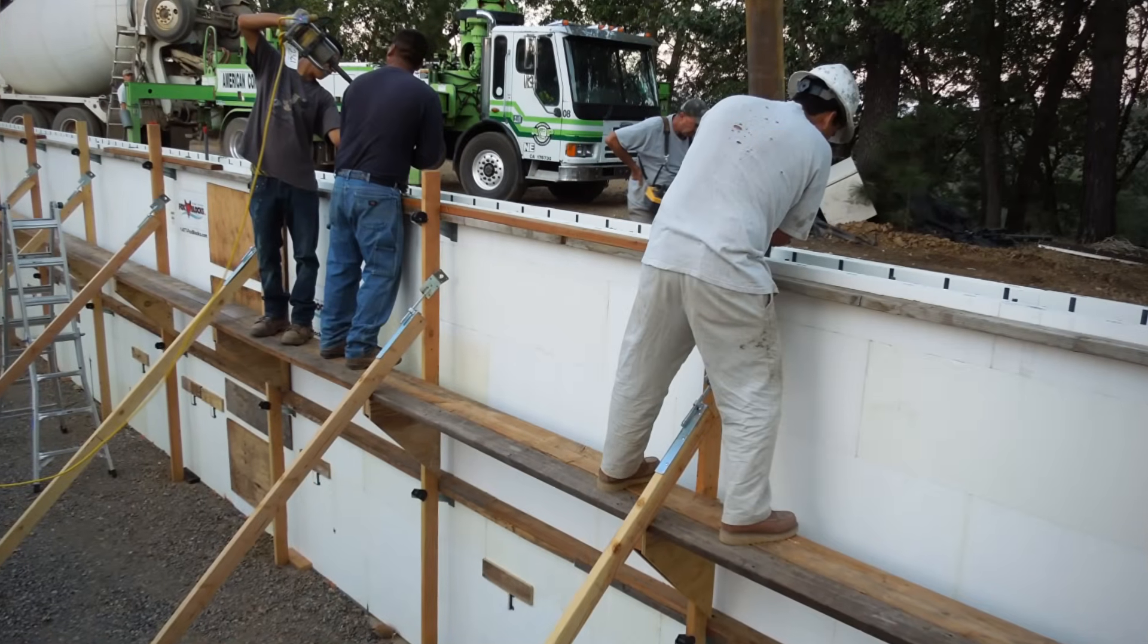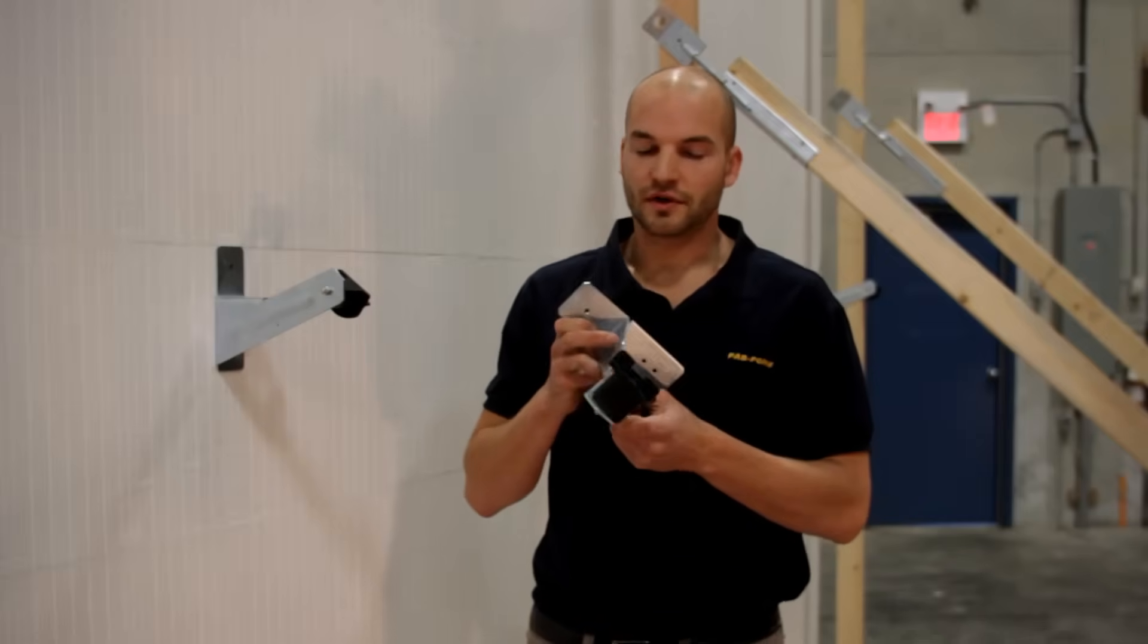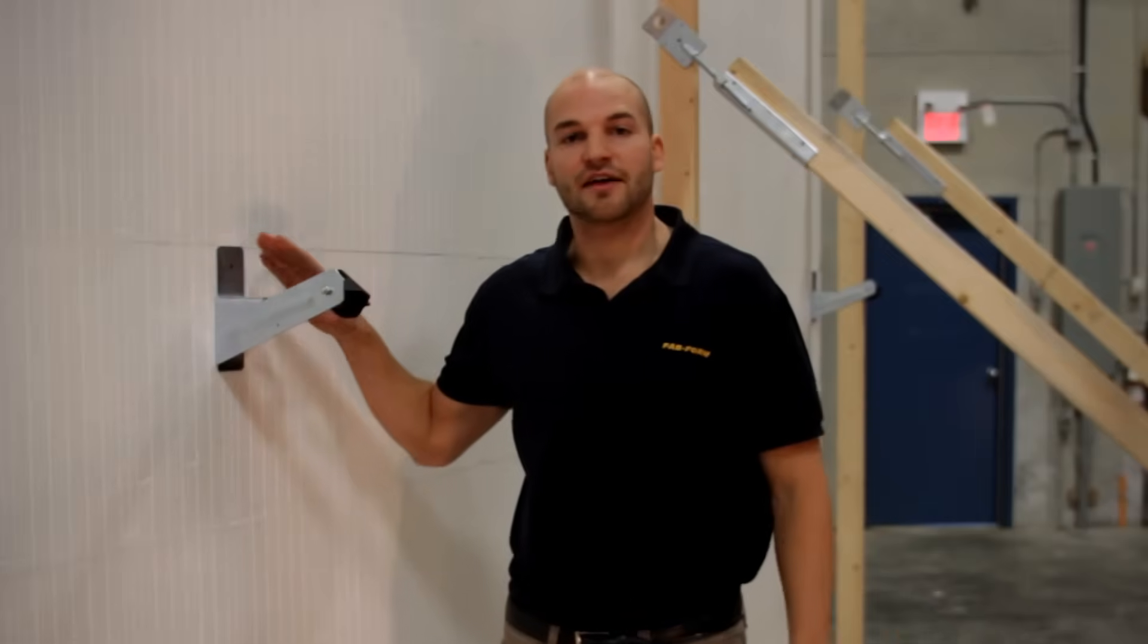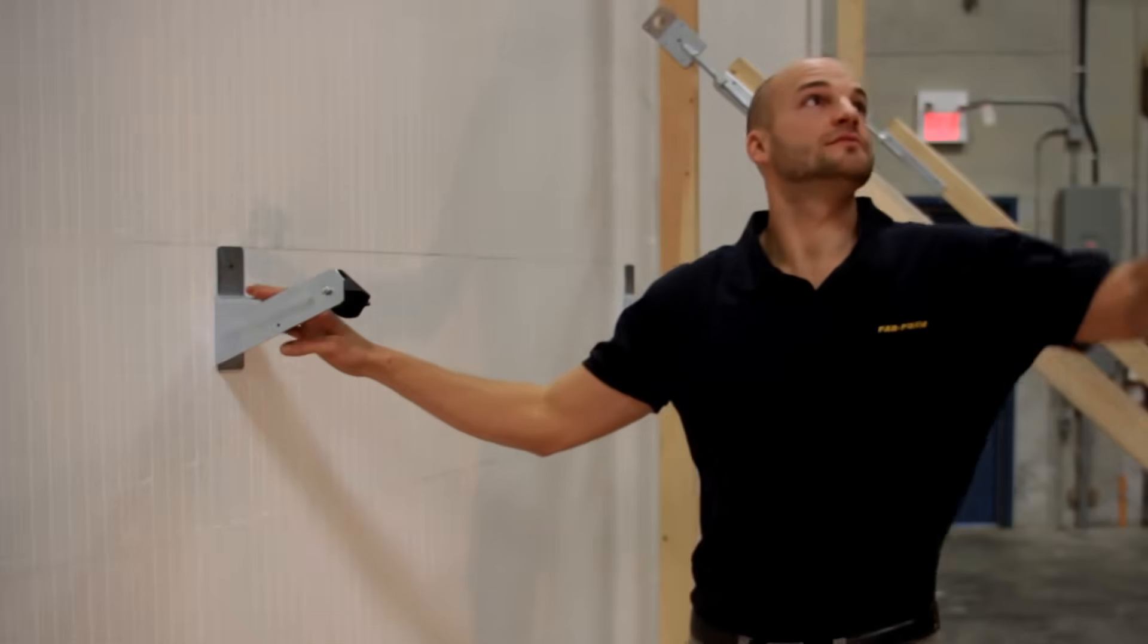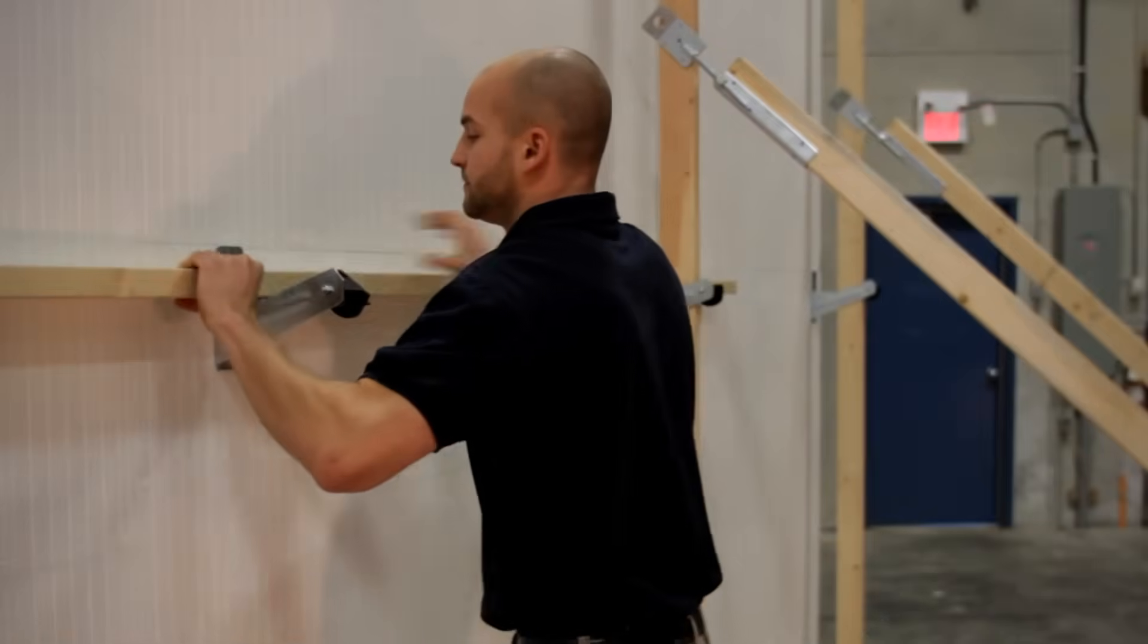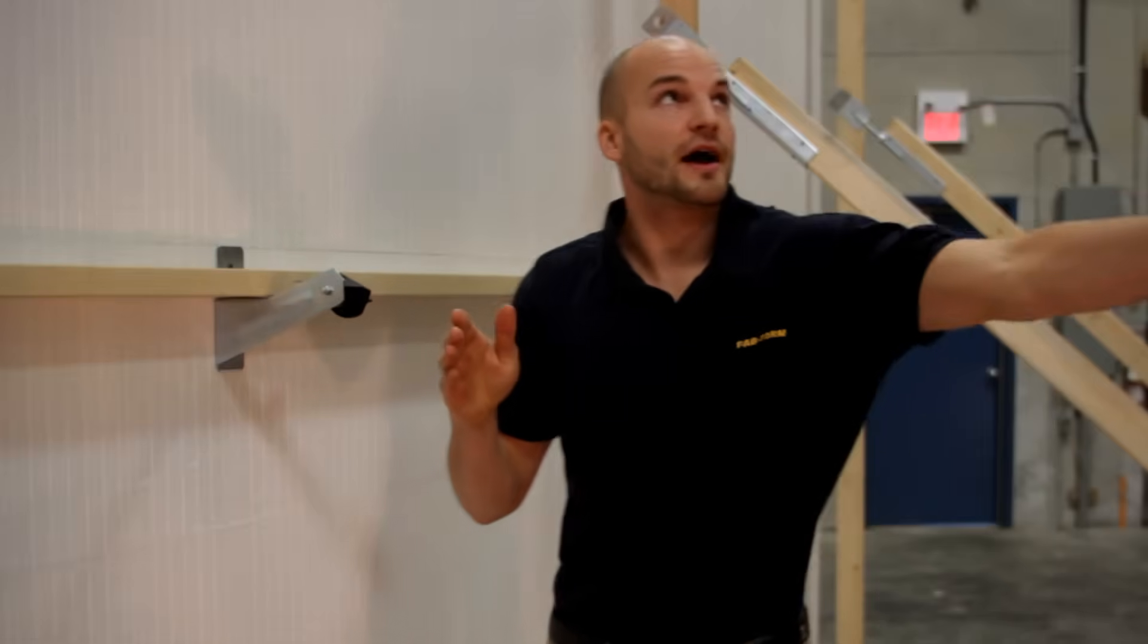The system is based around these metal brackets that we call Zonts. Once the Zonts are screwed into the web of the ICF wall, we have a cavity here for horizontal wheeler and for a vertical strong back.